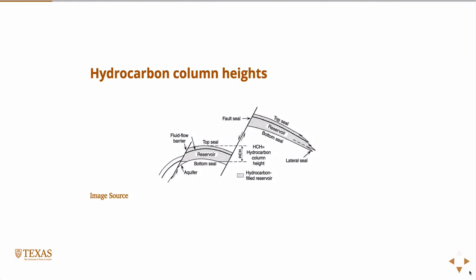Another one is just hydrocarbon column height. So we all know that the hydrocarbons are more buoyant than water. And so if you have a two or three phase saturated reservoir, then all your hydrocarbons are going to go to the top, and those are going to be at a higher pressure than the hydrostatic pressure of the water in the reservoir.